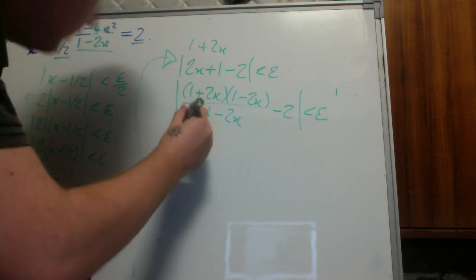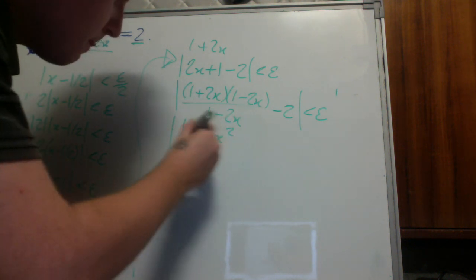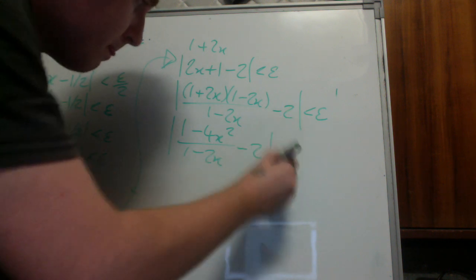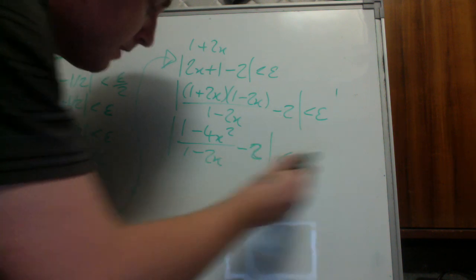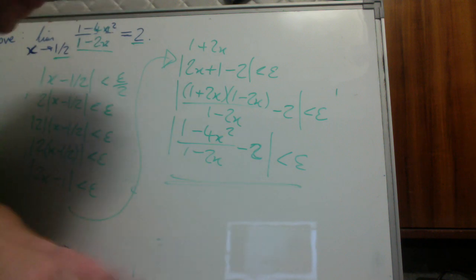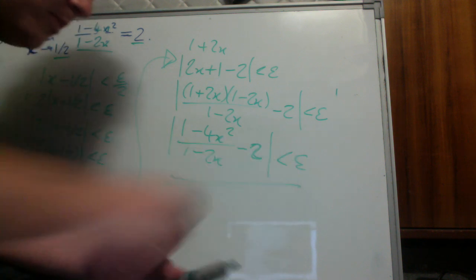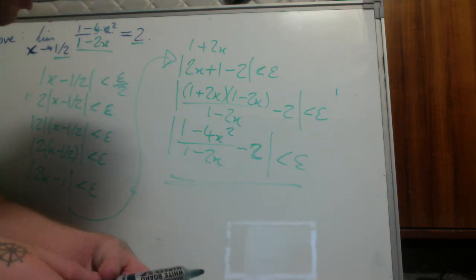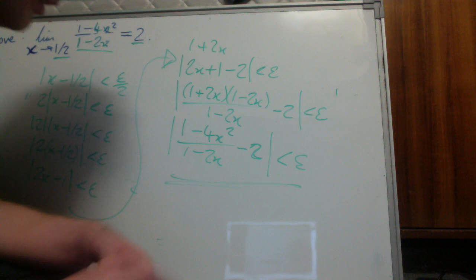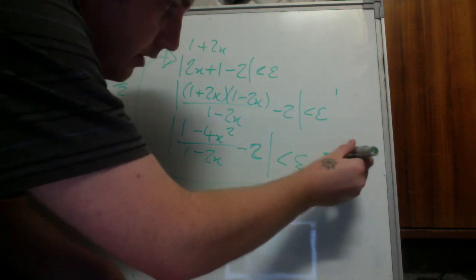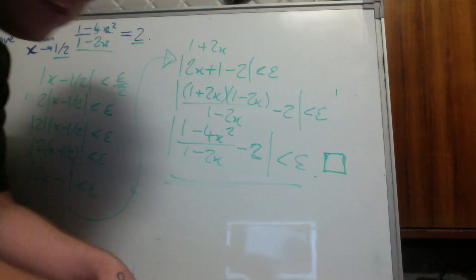So we've just done our first epsilon-delta proof. This was the consequent of the implication, so we're finished. Because the epsilon was arbitrary, the proof holds. That's really cool. We do full stop, do our square, and we're done.